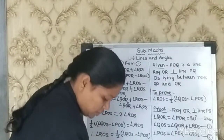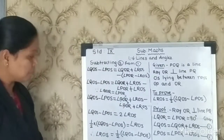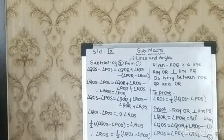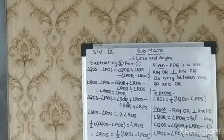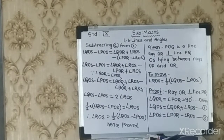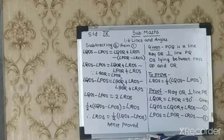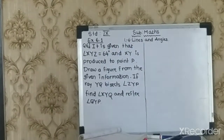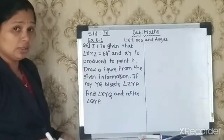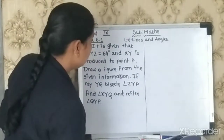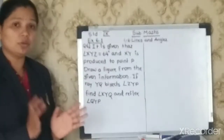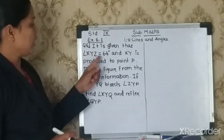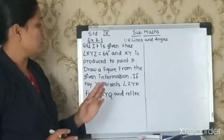Now question number 6: angle XYZ = 64°, and XY is produced to point P. You write down question number 6. From the given information, we draw the figure: angle XYZ = 64°, with XY produced to P.